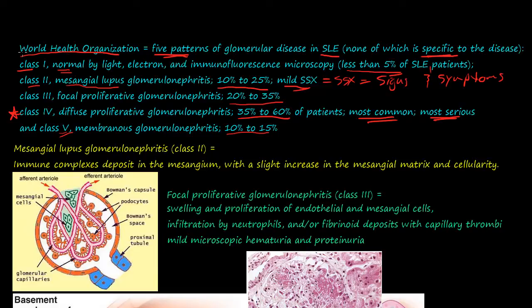According to the last video, we discussed the World Health Organization has five patterns of glomerular disease in SLE, and we're going to talk about each one of those in this video.